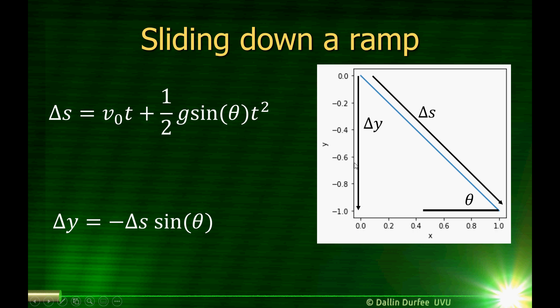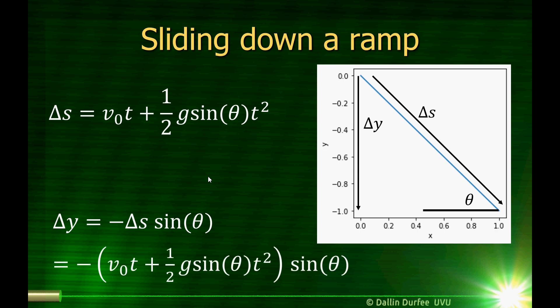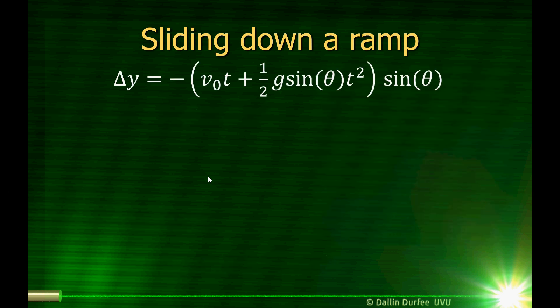If I draw a right triangle here with delta y, delta x, and delta s, y is the opposite side. So delta y is negative delta s sine theta. And then delta s is just v-naught t plus one-half g sine theta t squared, so we plug that in for delta s. Now we have an equation for delta y. And we had an equation for velocity — if I could use the position equation to solve for time and plug that in to find the velocity.